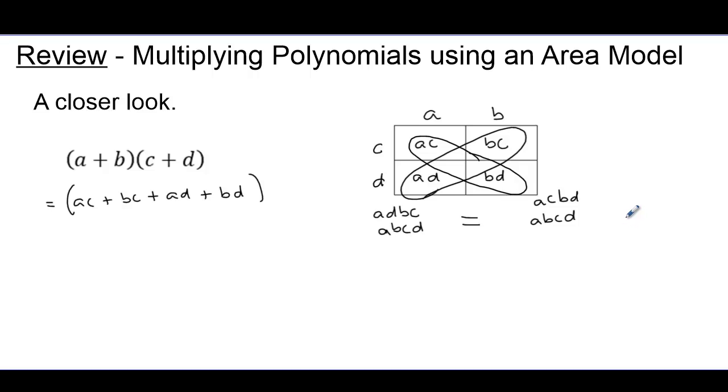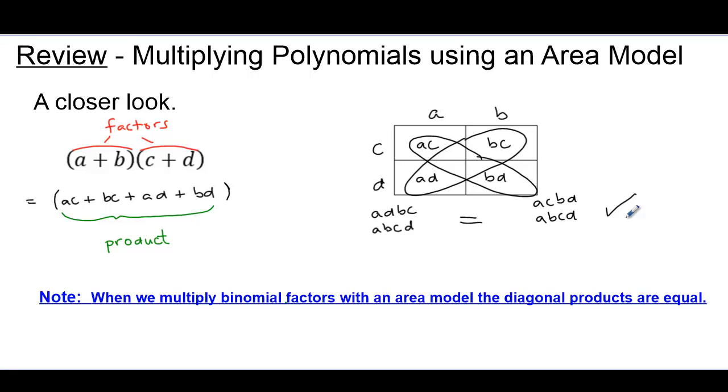So let's summarize. We've now learned that when we multiply binomial factors with this area model, the diagonal products will always be equal. And we're going to use that when we go backwards to factor.